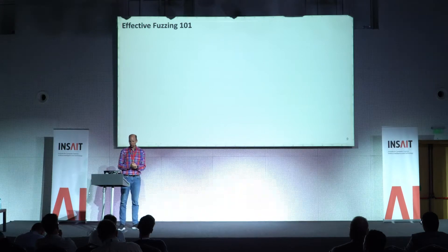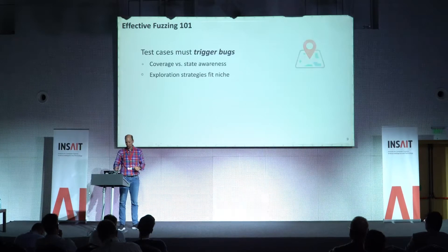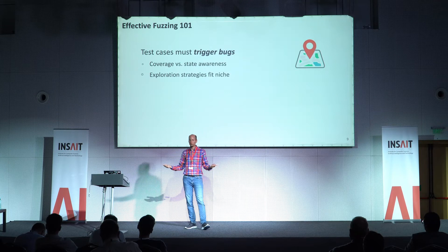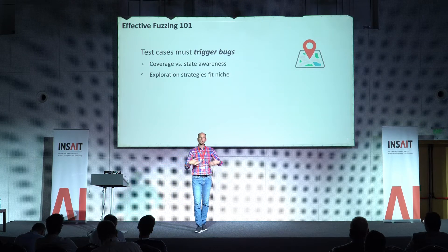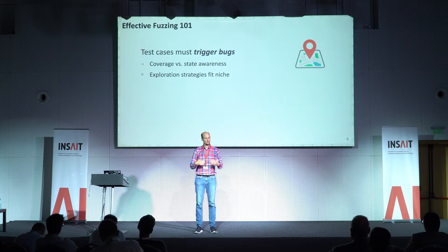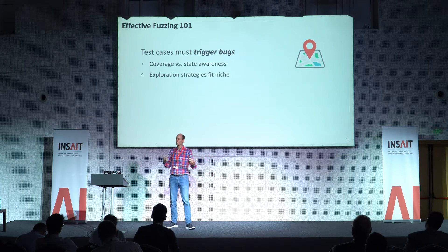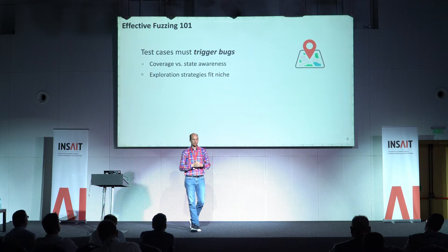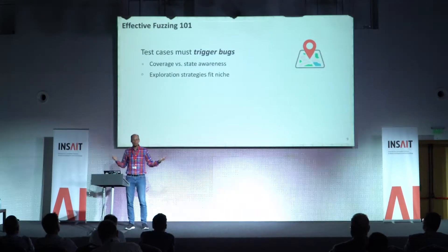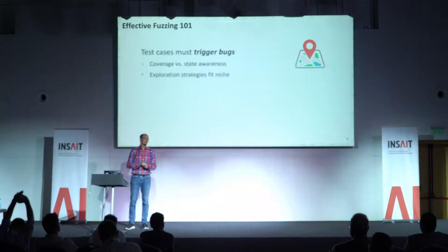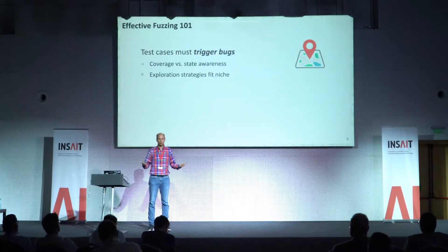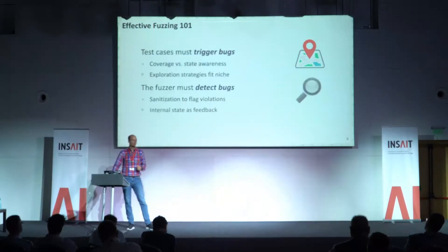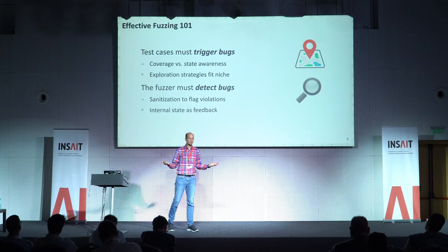How do we make fuzzing efficient or effective? You can make fuzzing effective in three easy steps. First, the test cases we generate must actually trigger bugs — coverage is a great start. But we've recently been looking more at state awareness and awareness of individual variables. We have an interesting paper coming up at FSE where we show that variable interactions are highly important to infer efficient test cases, and I just noticed today that this one actually won a distinguished paper award. Different exploration strategies targeted towards individual niches are equally important — for example, if you're working on Bluetooth fuzzing, you may want to optimize towards a system partially aware of the Bluetooth protocols.